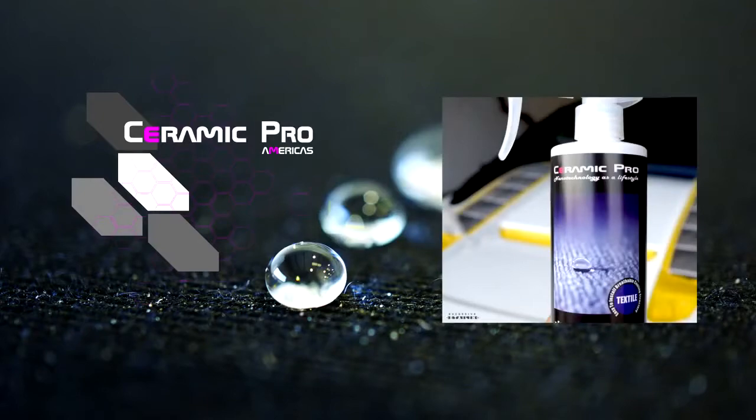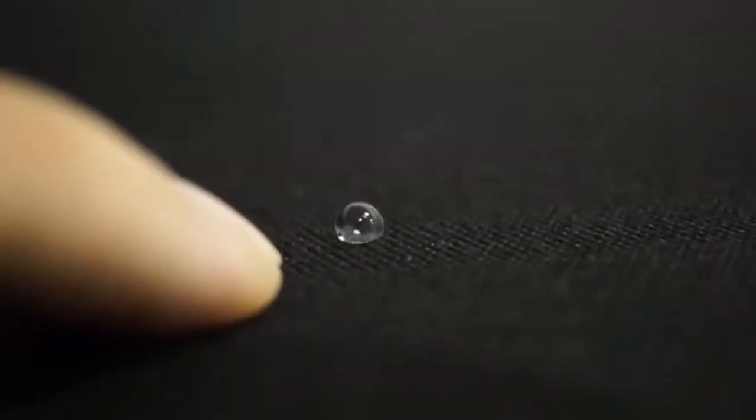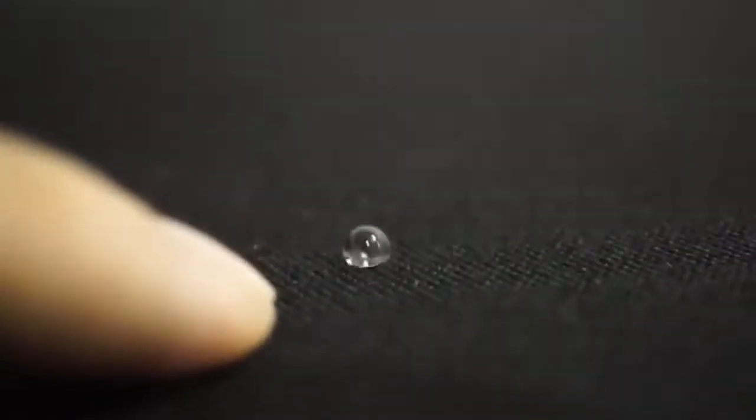Ceramic Pro Textile is a treatment that reduces the surface energy of the fabric being coated. Liquids form beads that roll off while keeping the fabric completely dry.